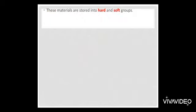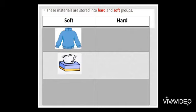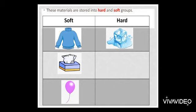So, first group. These materials are sorted into hard and soft groups. For example, soft like wool t-shirt and box of tissues and balloon. Hard materials like ice and brick and balloon.